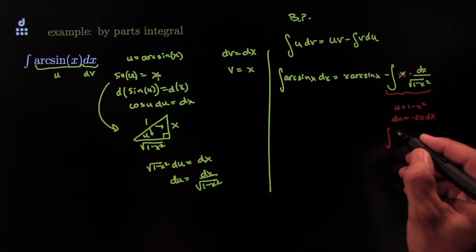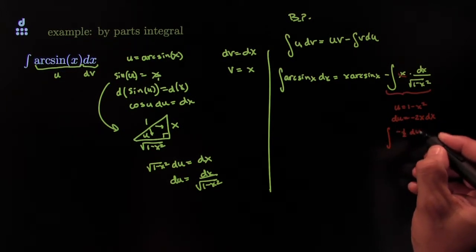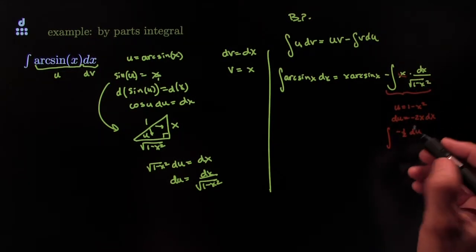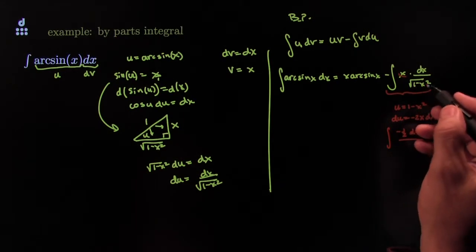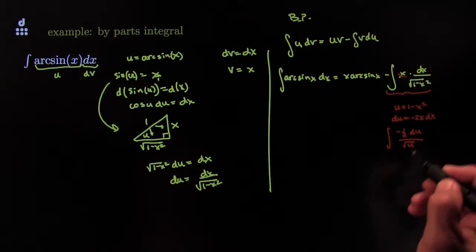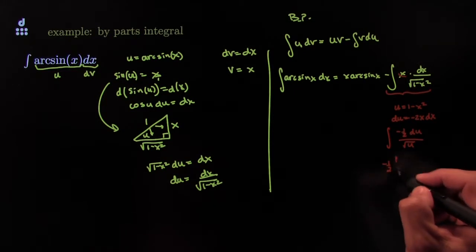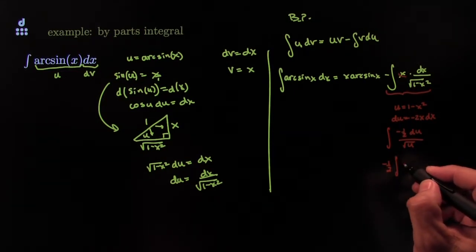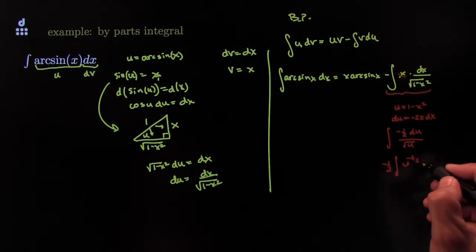It'll be, solving here, it'll be negative 1 half du. And then, on the bottom, I'd have square root of 1 minus x squared, so it would be the square root of u. So, that would be negative 1 half integral of u to the negative 1 half du.